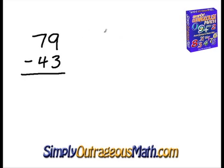Here we have 70, so 70 minus 40 is going to give us 30. We just counted down. Now we have to add 9, so 30 plus 9 is 39. And 39 minus 3 is 36.